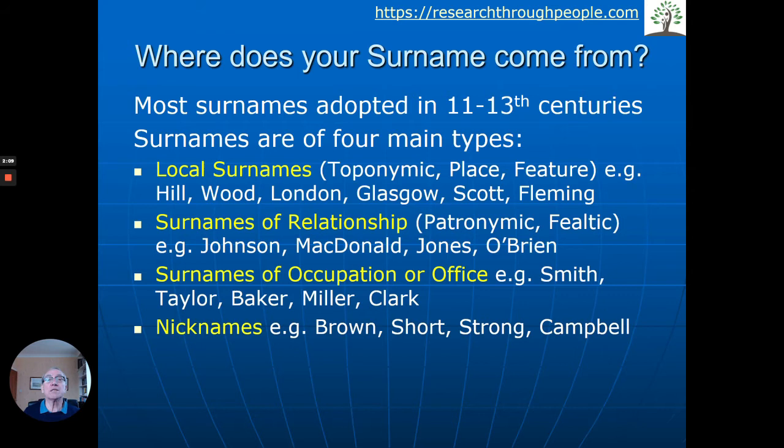The third big group was occupational surnames. Every place had a smith, a tailor, and so on, and that's what distinguished that person, so you get lots of surnames based on occupation. The fourth big group is nicknames — some feature of the person, perhaps they had a dark complexion, they were brown or short in stature. In Scotland, Campbell means 'twisted mouth.' So those are the four big groups from which most surnames most likely came.